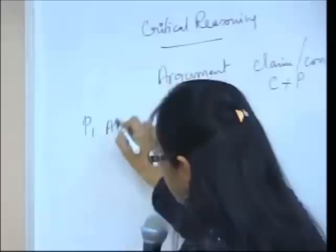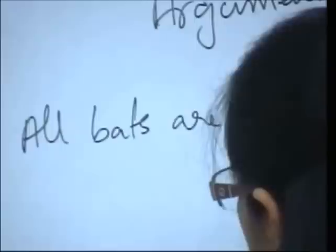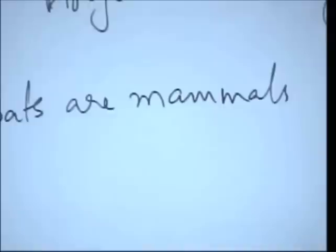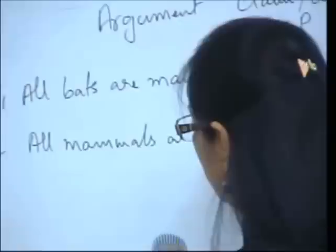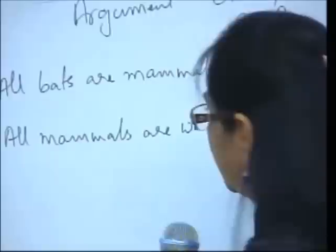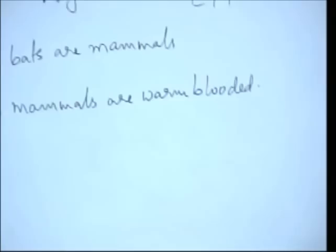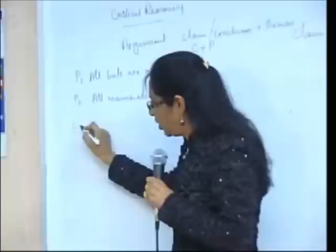From that program you gathered the information that all bats are mammals. From your childhood, there is another nugget of information already in your mind — that all mammals are warm-blooded. This is information you already have from school. Based on these two premises, what is the conclusion you can reach? Two plus two equals four.